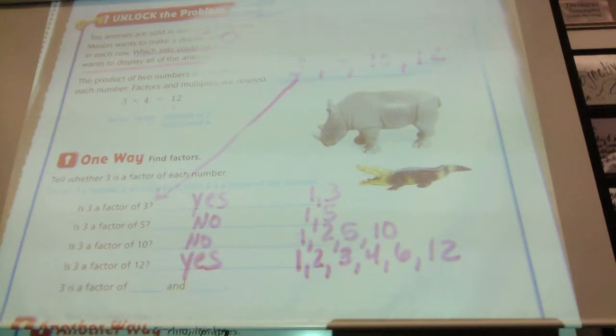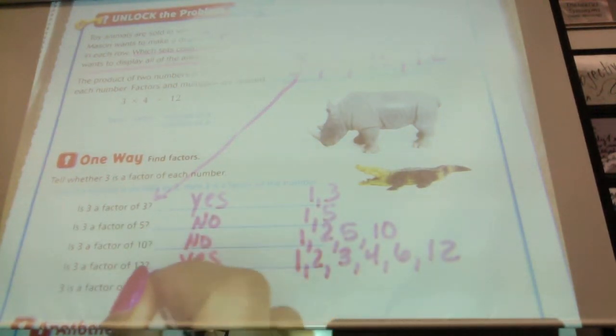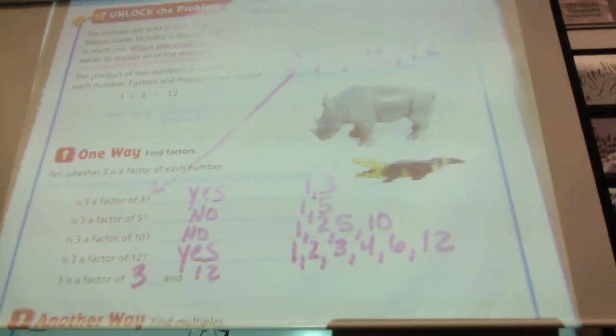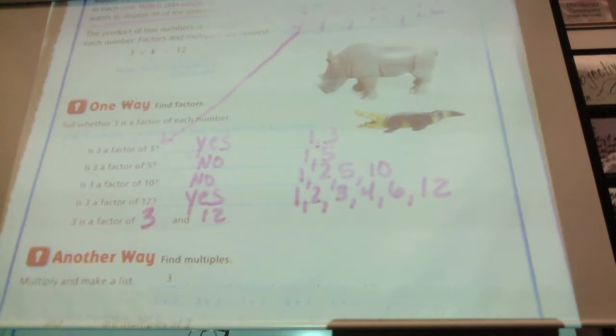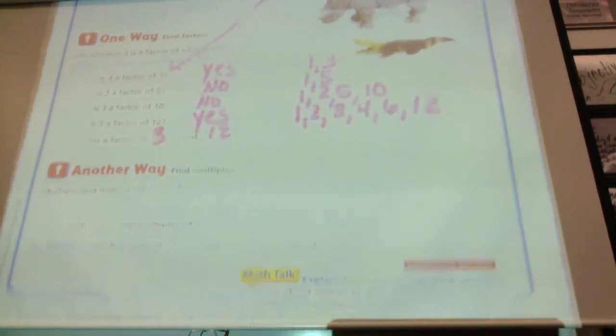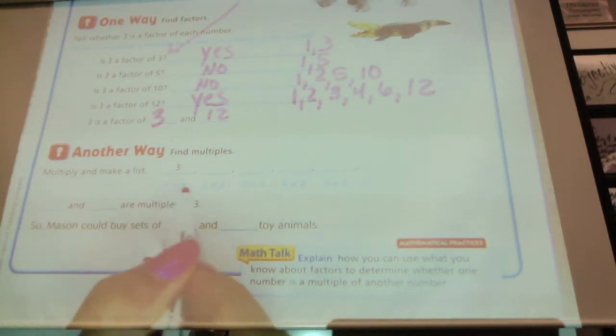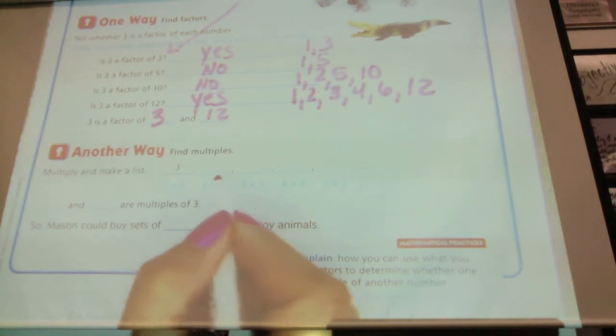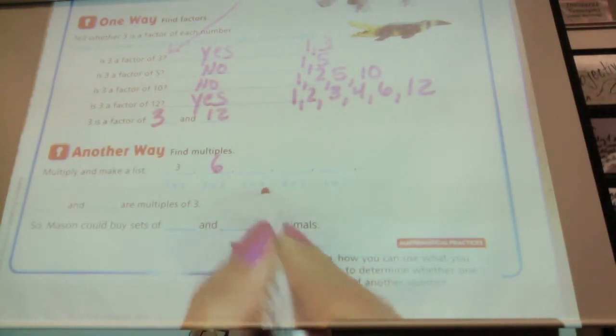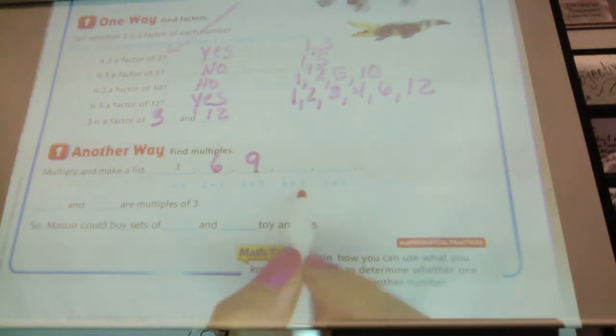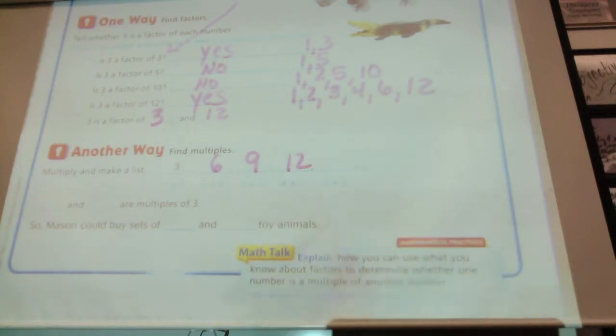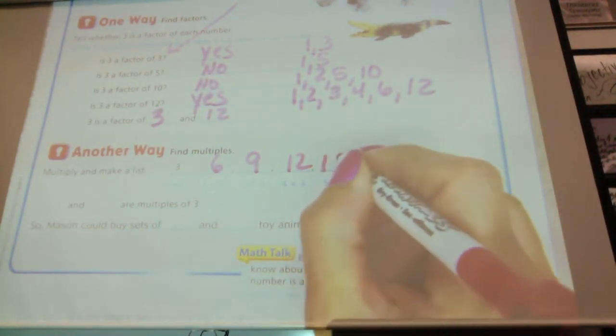Three is a factor of which two numbers, then, that we chose up there? Three and twelve. You can also plan out your rows. Start with one row of three, that's three animals. Two rows of three would be six. Three rows of three, nine. Four rows of three, twelve. And five rows of three, fifteen.